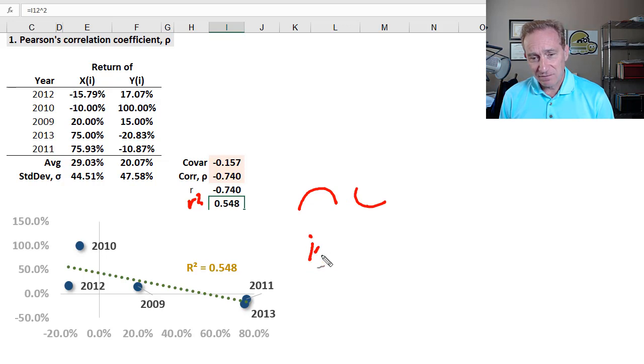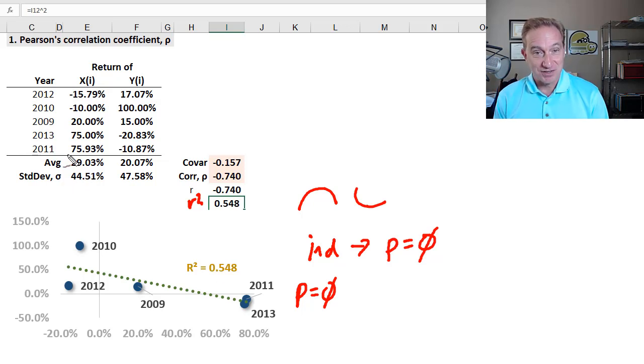That leads to a second weakness that really follows from the first one. If assets are, or returns in this case, or variables, just generically, if they are independent, then it follows that the correlation will be 0. The Pearson's correlation coefficient will be 0. However, if the Pearson's correlation coefficient is 0, because it's a measure just of linear dependence or association, that does not imply independence, because they could be nonlinearly dependent.